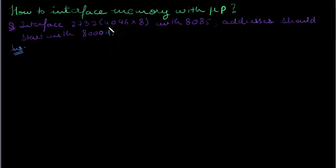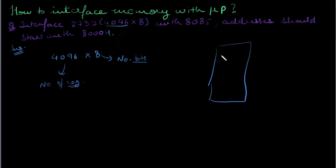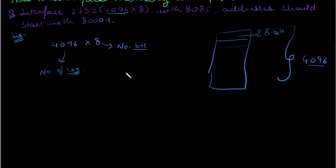The first thing you need to see is this: 4096 times 8. This is actually the number of registers you will be addressing, and this is the bit. So 4096 into 8 is actually the number of registers in the memory or the number of addresses. And this is the number of bits. This is an 8-bit address, so it will be 8 bits, and this total will be 4096.